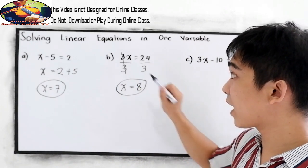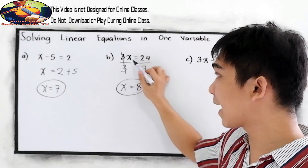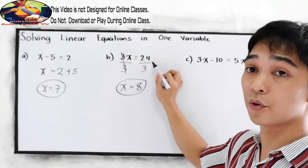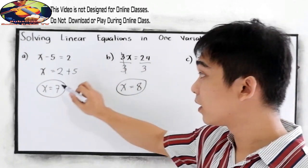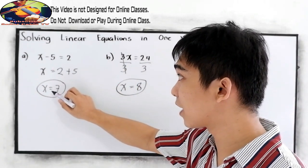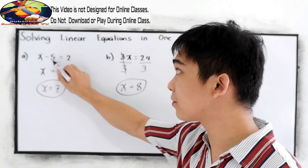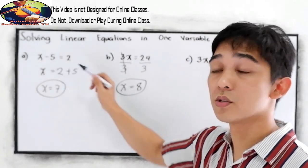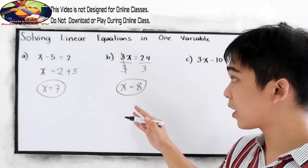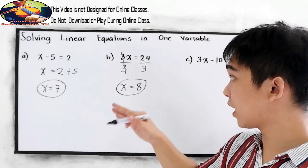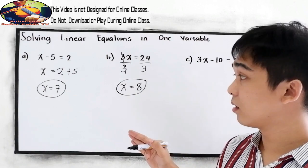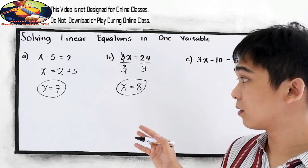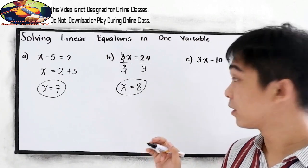If we check: 3 times 8 gives us 24. And in letter A, 7 minus 5 is equal to 2. So our answers in A and B, if we check, they are correct.